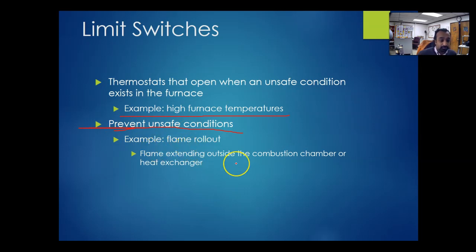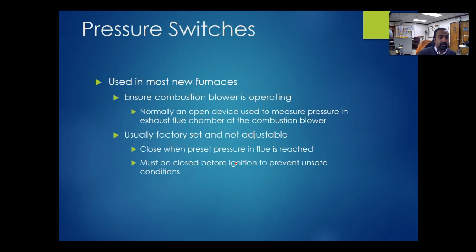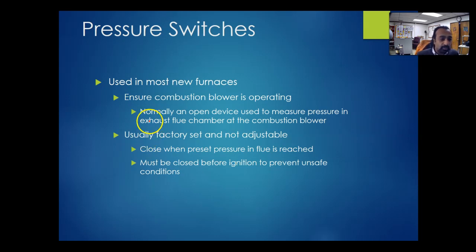One example of a safety issue is flame rollout. Also, the direction of air is very important — if you accidentally reverse the direction inside the duct, you might be blowing air into the furnace and forcing the flame to come outside rather than staying inside. Pressure switches are very important, especially for steam systems. They are also used to prove the flow of air — if air is flowing, it will produce some kind of negative pressure, ensuring the combustion blower is operating.